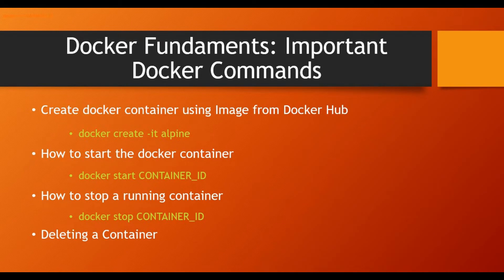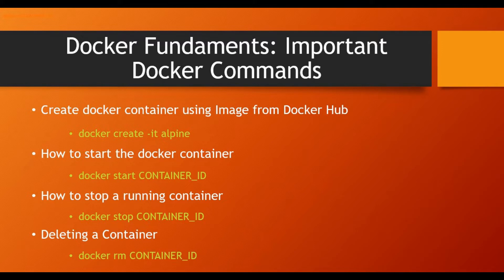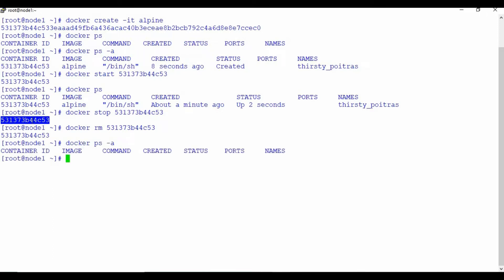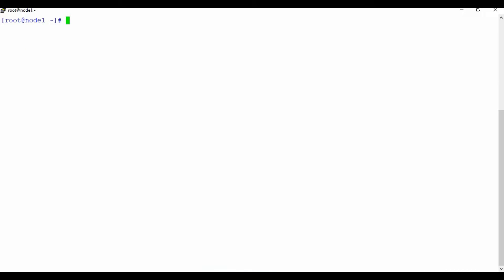A small correction: for deleting a container it should be docker rm, not docker stop. For deleting a stopped container use docker rm with the container ID. If it's a running container, use docker rm -f for a force delete. Let me delete this container — as you can see, the containers are now deleted.